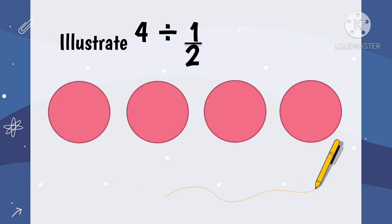So, the 4 circles represent 4 as the whole number.